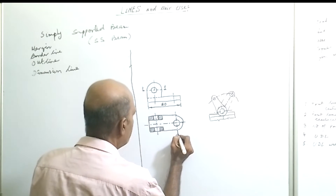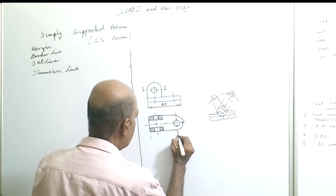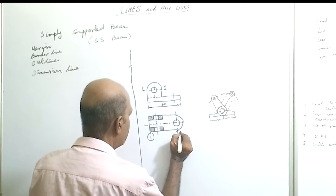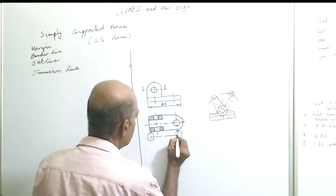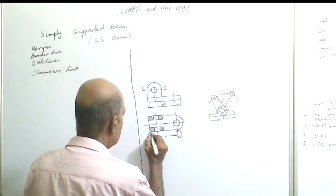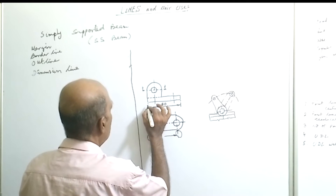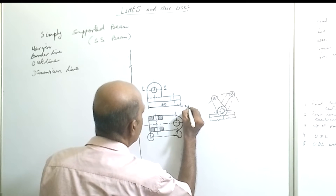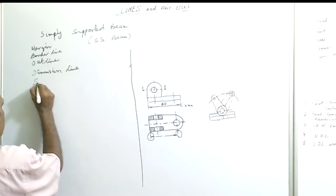Next is the extension line. To show a dimension, projections are taken from the object. The extension line starts by leaving 1 to 2 millimeters from the object, then extends beyond the arrowhead by a maximum of 3 millimeters. This line is known as the extension line.